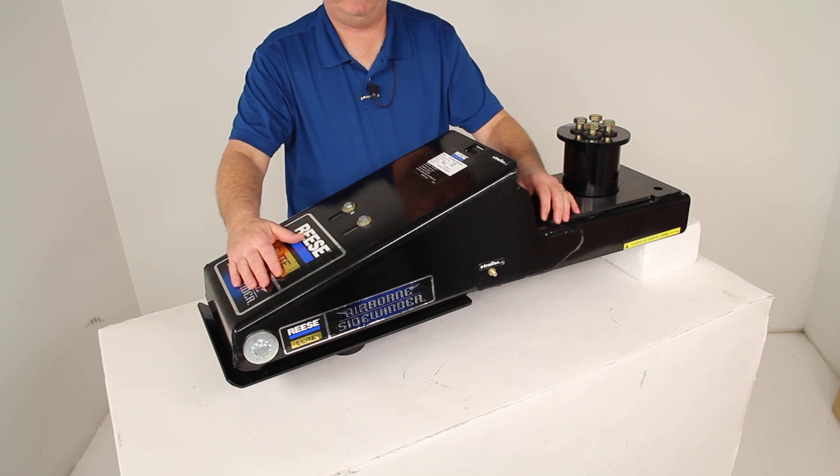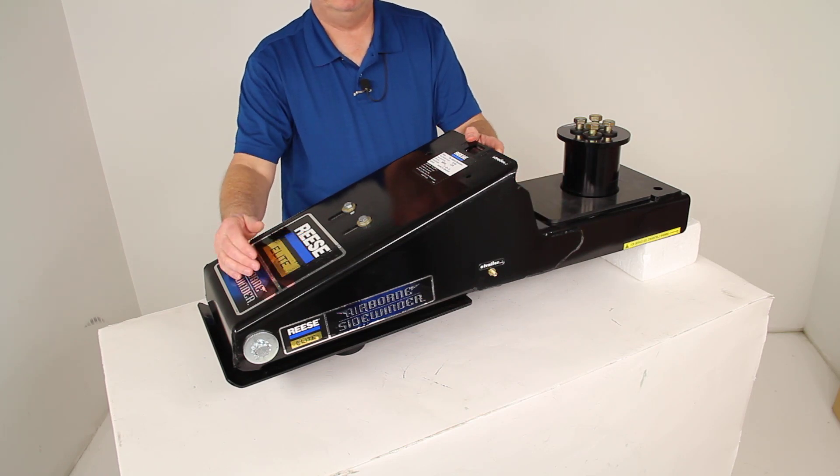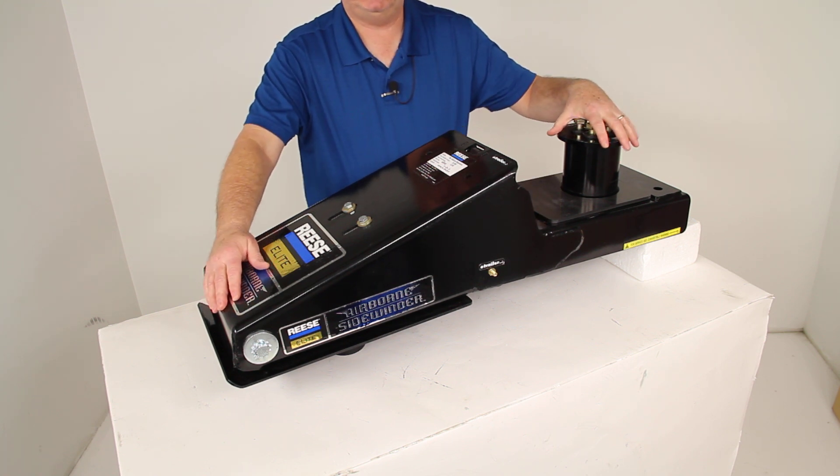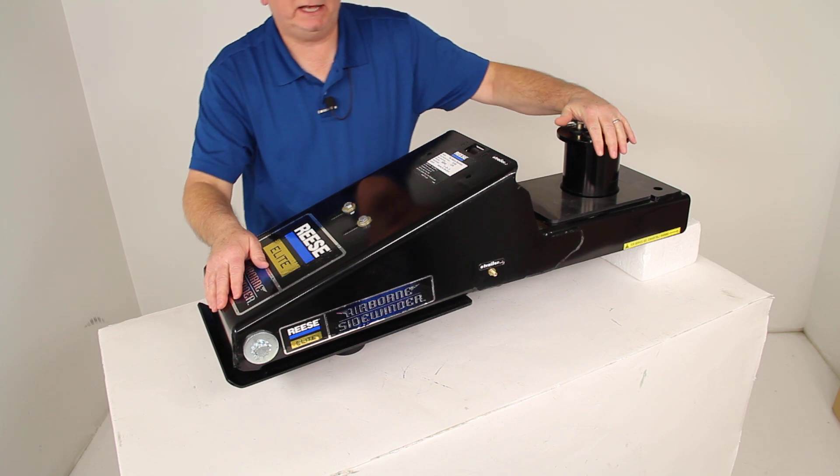Today we're going to review part number 5AS16K. This is the Reese Elite Airborne Sidewinder Combo. This one has no turret and it is a 16,000 pound weight capacity.